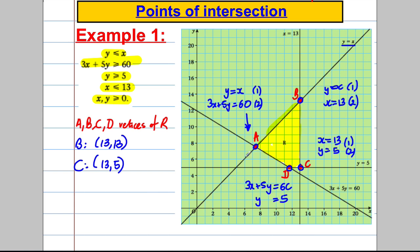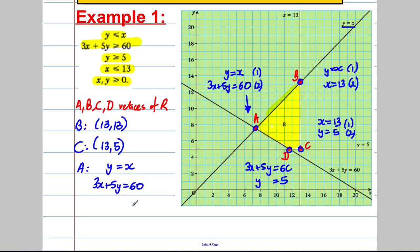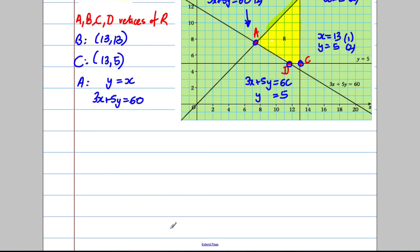Now, A and D are slightly harder. They need to be solved by simultaneous equations. So for A, we're solving where Y is equal to X and we're solving 3X plus 5Y is equal to 60. We're solving those two simultaneous equations. And for D, what are we solving? Well, we're solving 3X plus 5Y is equal to 60 and we're solving Y equals 5.